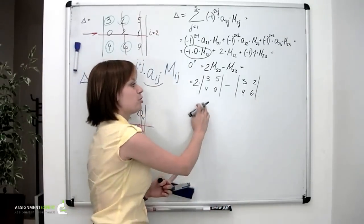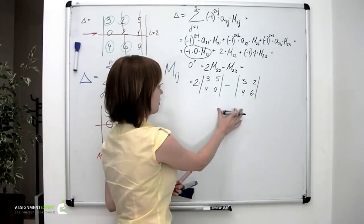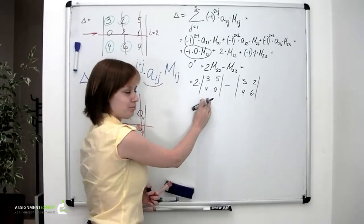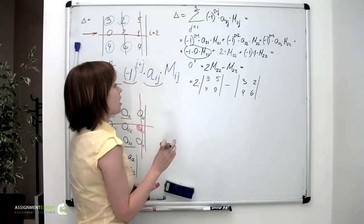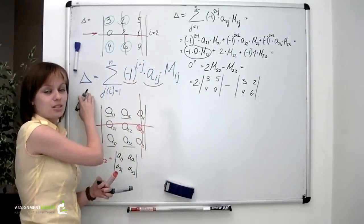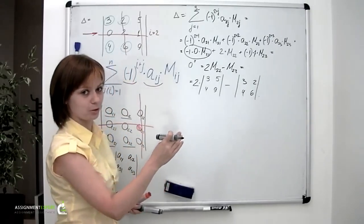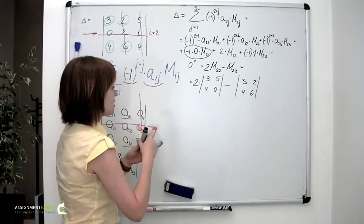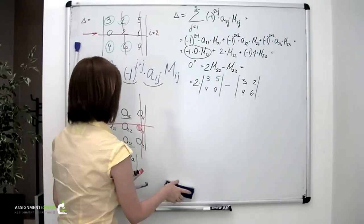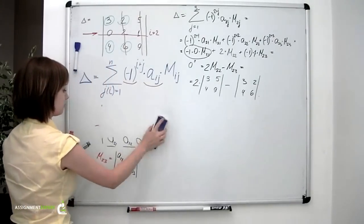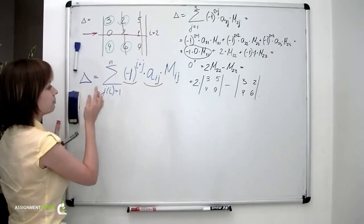Okay, now we have two more determinants to calculate. They are of the size 2 by 2. But our formula works for the determinant of any size, so the calculations of these two won't be a problem at all. Now, let's rewrite them separately and calculate them.